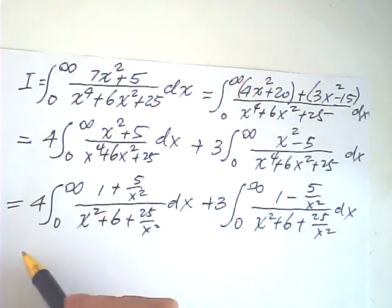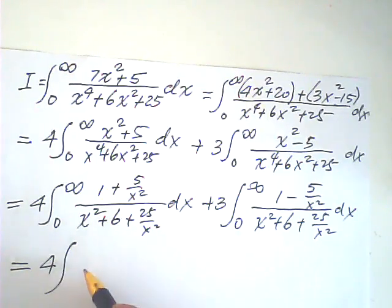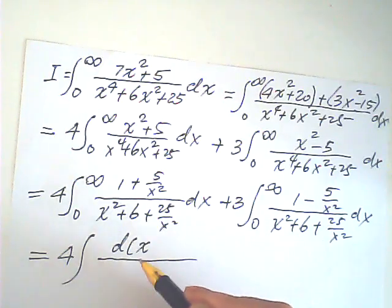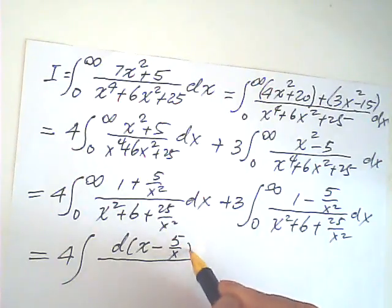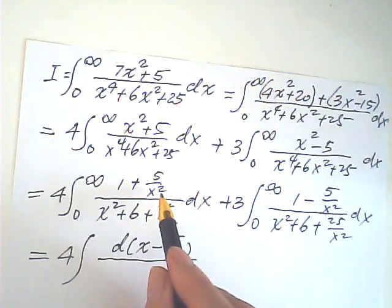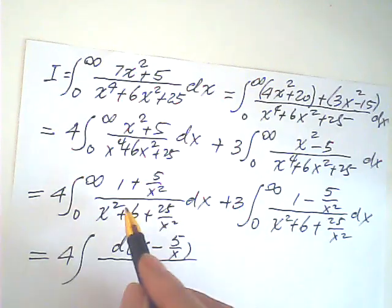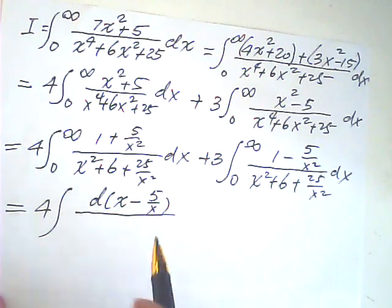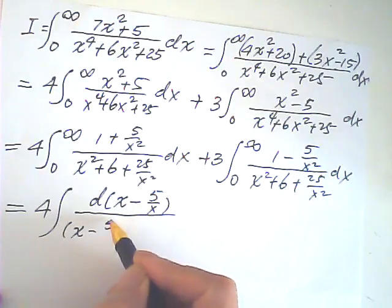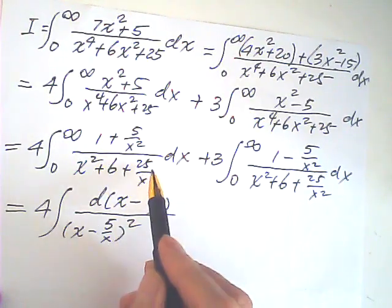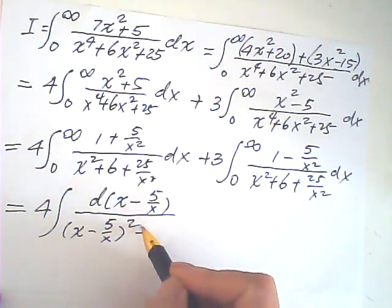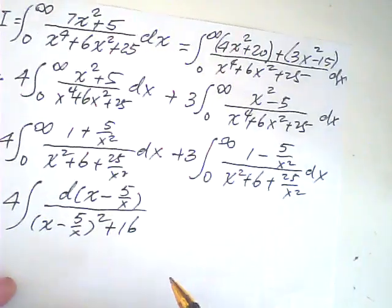Now, then, something happened, which is wonderful. I rewrote the numerator as the derivative of x minus 5 over x. This derivative with respect to x is 1 minus 5 over x squared, negative. And I can write the denominator in terms of x minus 5 over x, which is possible. x minus 5 over x squared, that would be x squared minus 10x plus 25 over x squared. The midterm is minus 10. I have 6, so I have to plus 16 to restore the equal sign.